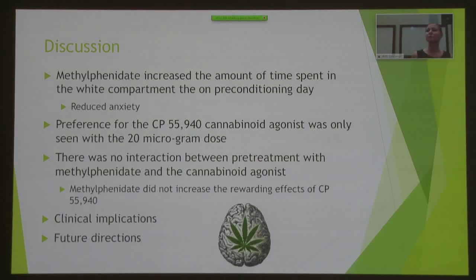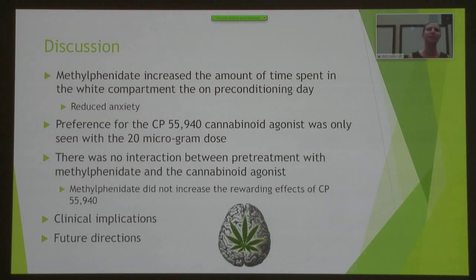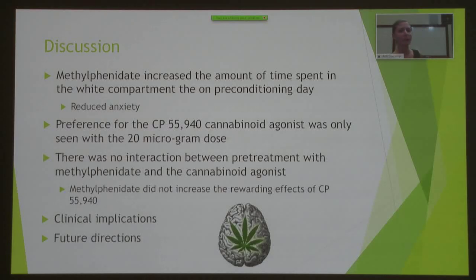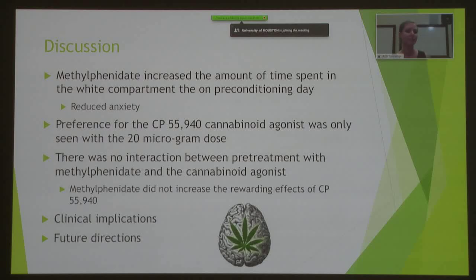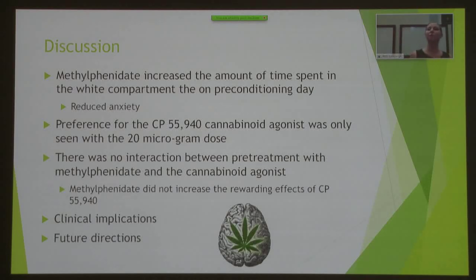So what does this all mean? Methylphenidate pretreatment increased time spent in the white compartment during preconditioning, suggesting it causes a reduction of anxiety — rats are not usually prone to spending time in bright, open spaces. We also found a preference for the cannabinoid agonist only at the 20 microgram dose. However, there was no interaction between methylphenidate pretreatment and the cannabinoid agonist, so we cannot currently say that methylphenidate is significantly enhancing the rewarding effects of our cannabinoid drug.